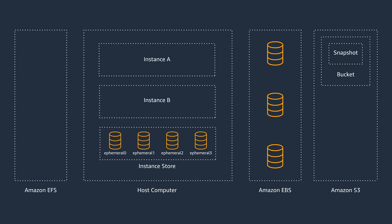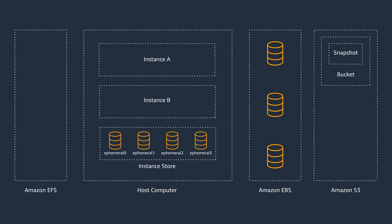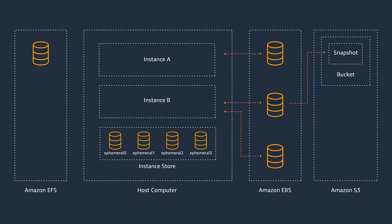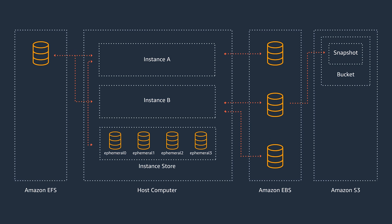Amazon Elastic Block Store, on the other hand, is a block level storage that can be attached to EC2 instances for persistent storage. Once you attach a volume to an instance, you would use it as you would use your physical hard drive.